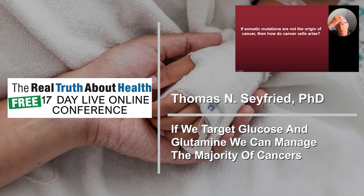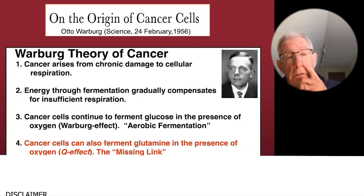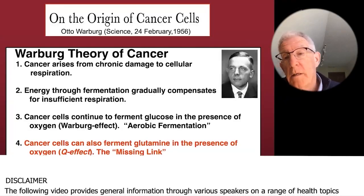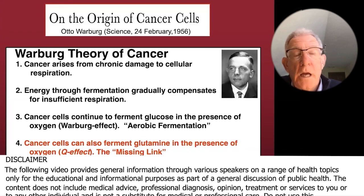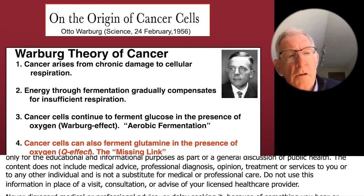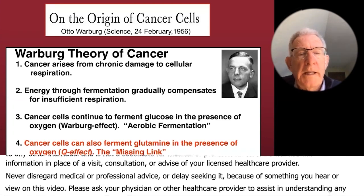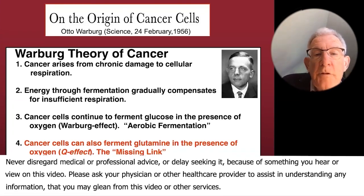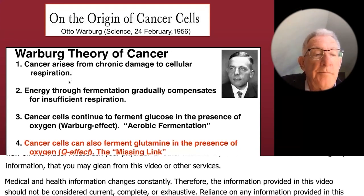So somatic mutations are not the origin of cancer. How do we get cancer? How does it arise? Well, this goes back to Warburg, the German scientist from the 1920s and 30s — he passed away in 1970 — who clearly showed that cancer arises from chronic damage to cellular respiration, the way we get energy from oxygen.